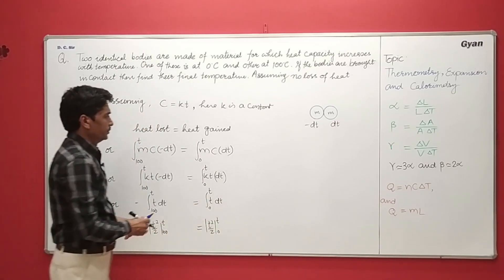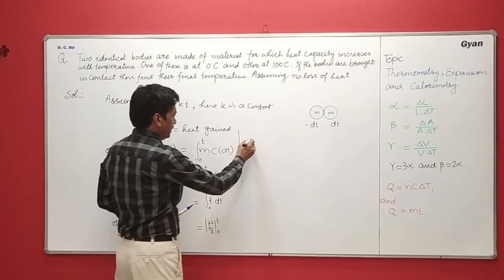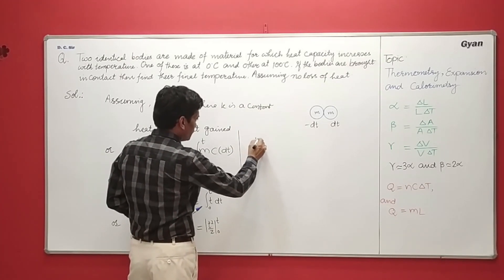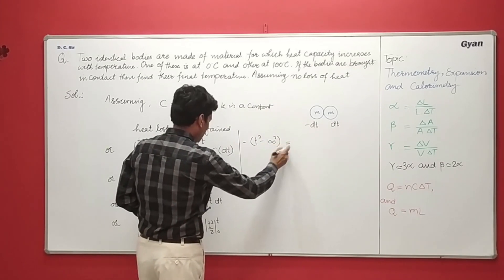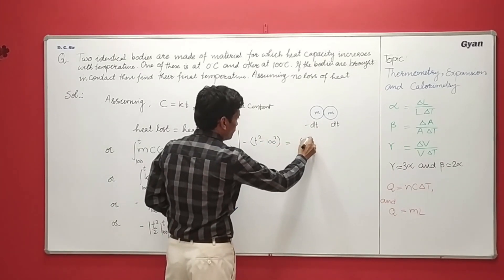Now I am simplifying, we have here T square, that is T square minus 100 square is equal to T square minus zero.